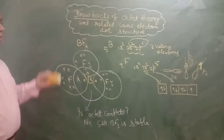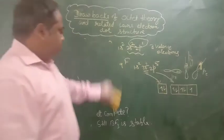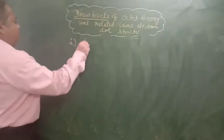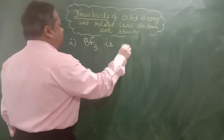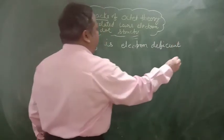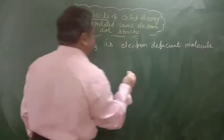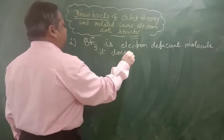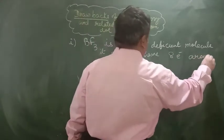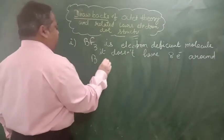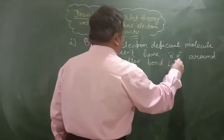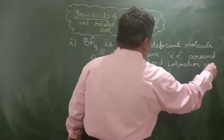So can we write, after using this? First, BF3 is an electron-deficient molecule. It does not have 8 electrons around boron even after bond formation with fluorine.